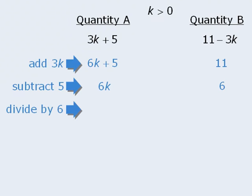Finally, if we divide both quantities by 6, we get k for quantity A and we get 1 for quantity B.